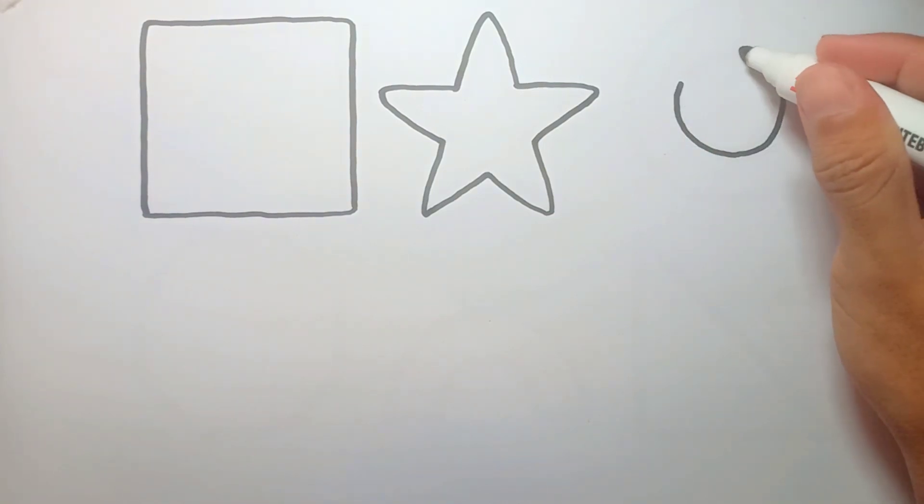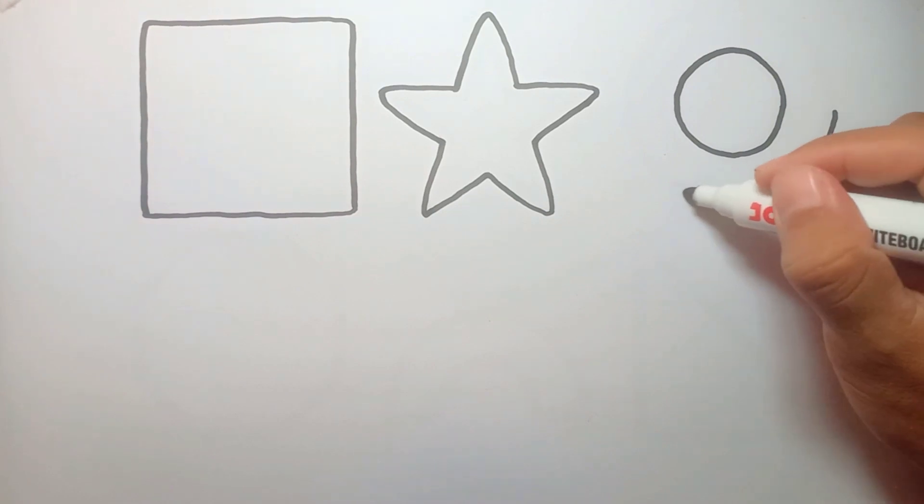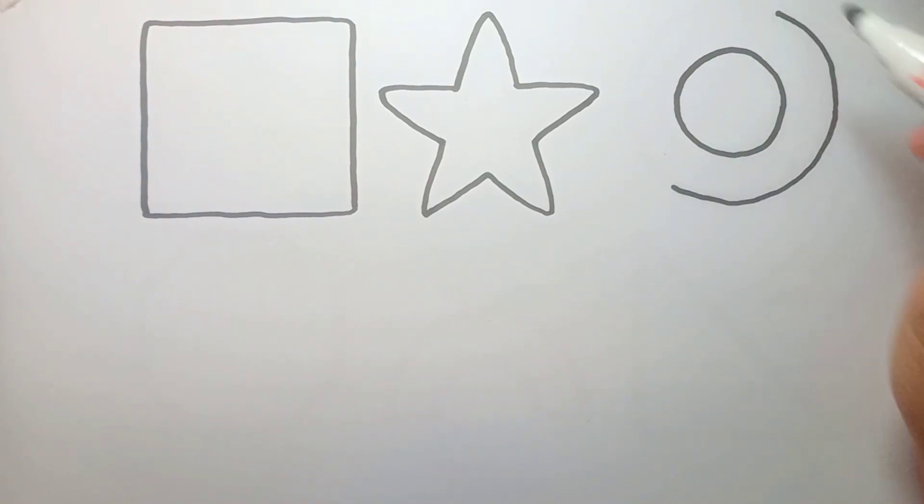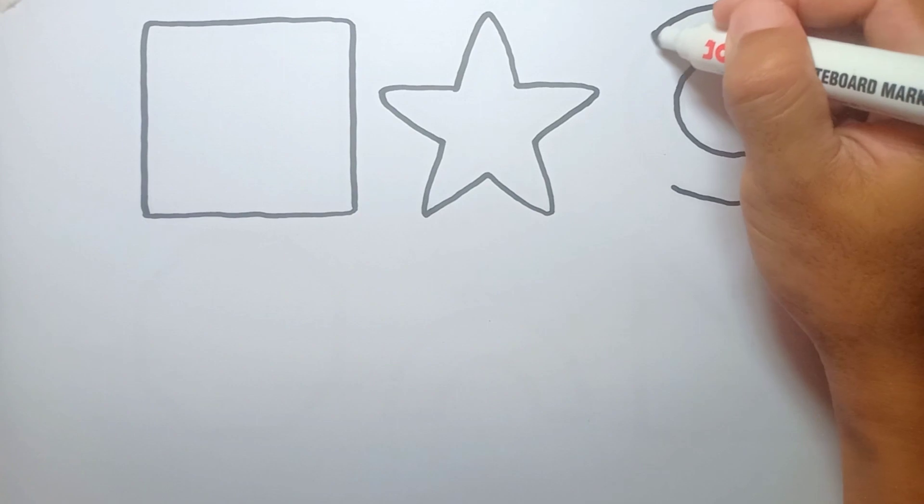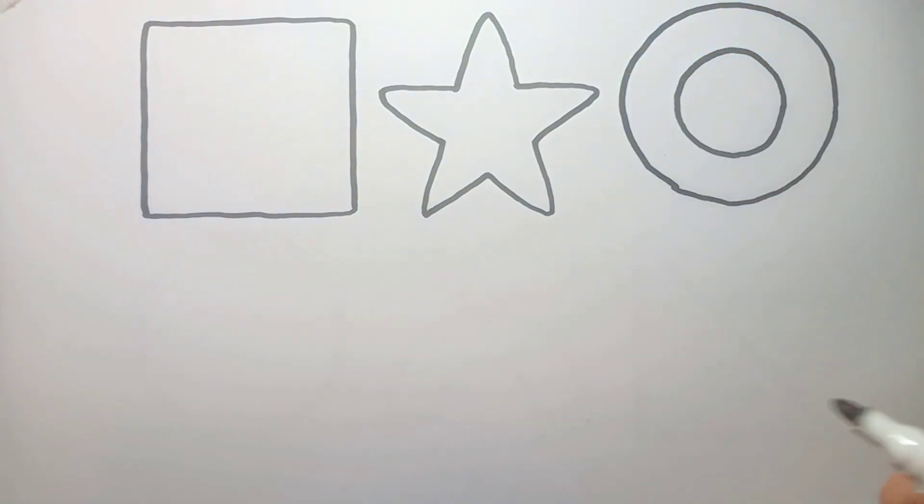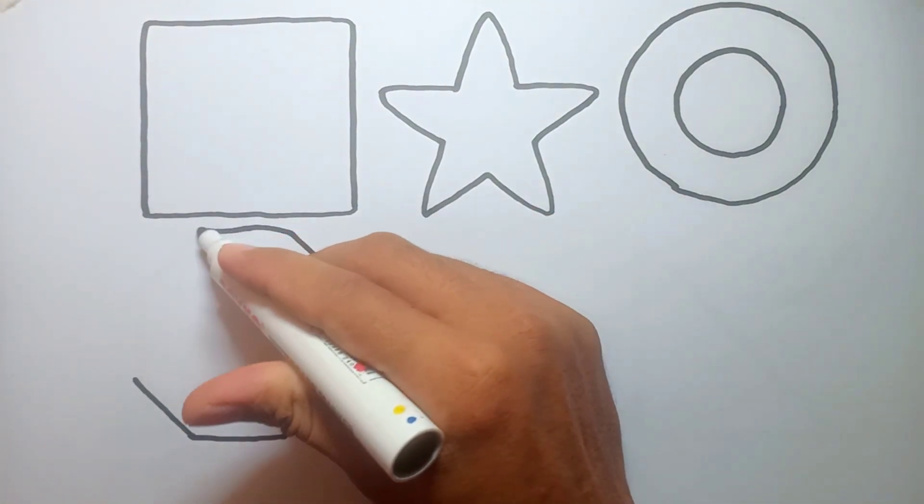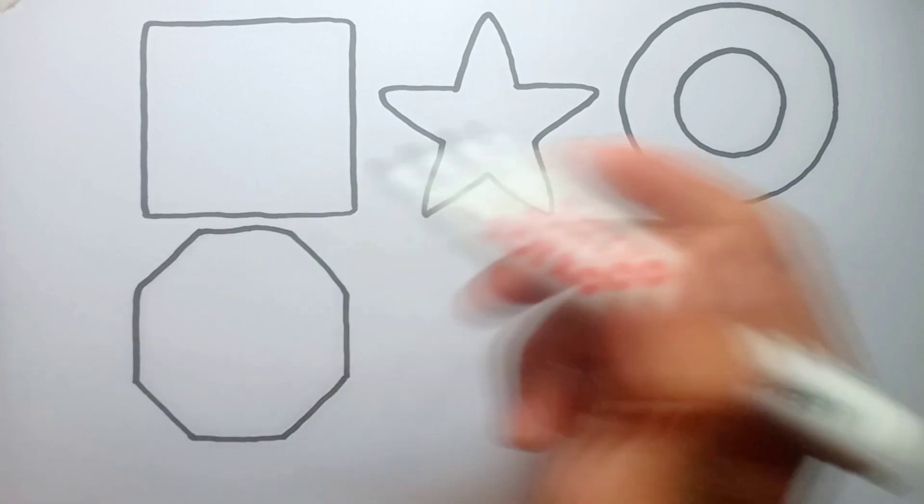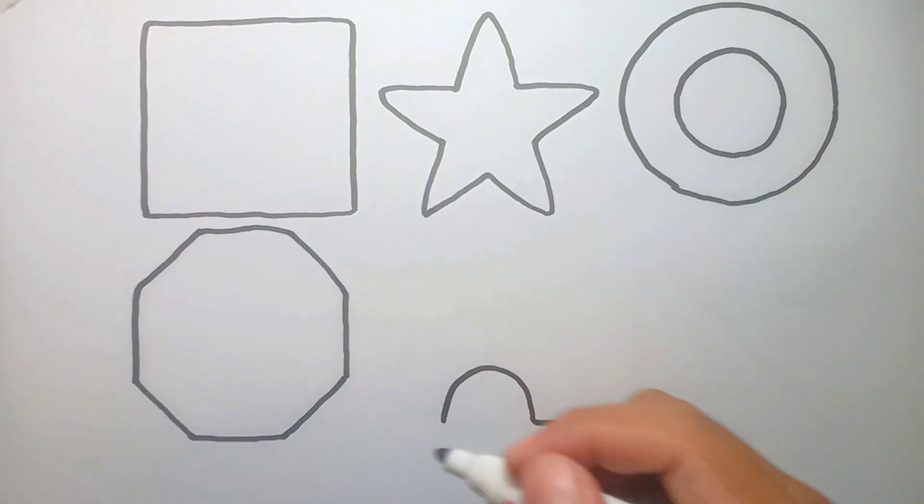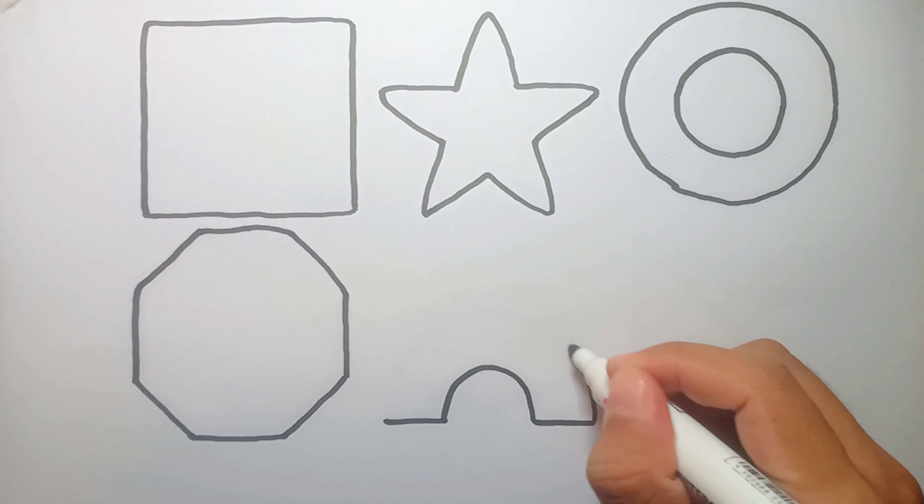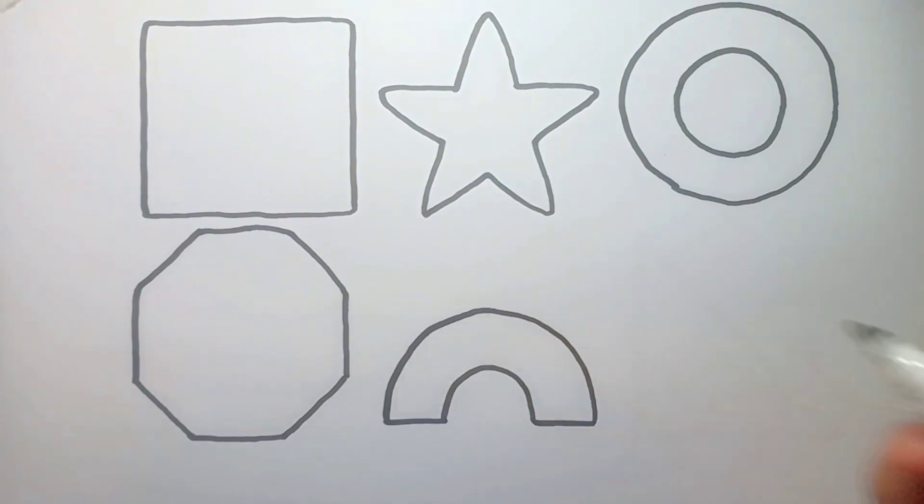Okay, next. This is a ring. This is an octagon. This is a semi-circle. This is a right angle.